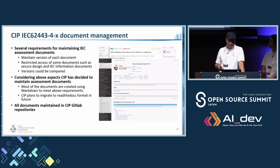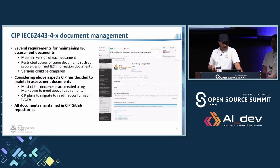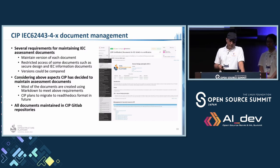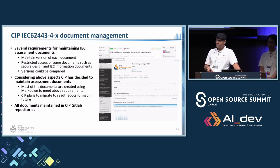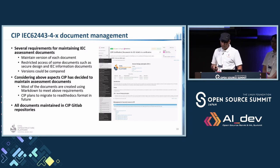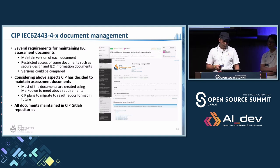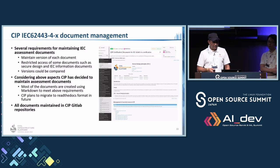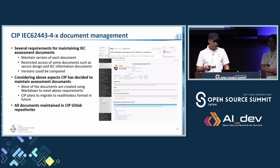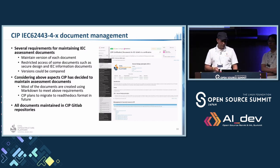During our IEC activities, we have created comprehensive documentation available in our GitLab repositories. This documentation addresses all IEC requirements and explains in detail each requirement and how CIP meets it, including what specific actions have been taken. For 4-1 and 4-2, we have created this documentation, but for 4-2 we are currently working with a certification body to revise and update it for the identified gaps.